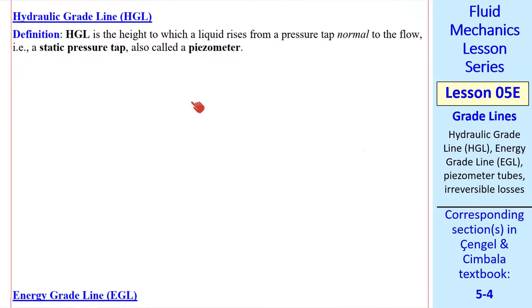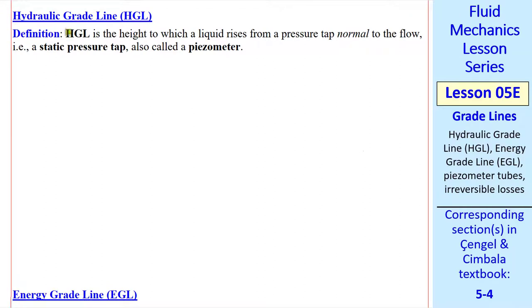Consider first the hydraulic grade line, or HGL. By definition, HGL is the height to which a liquid rises from a pressure tap normal to the flow, which we also call a static pressure tap. I'll illustrate with the diagram.